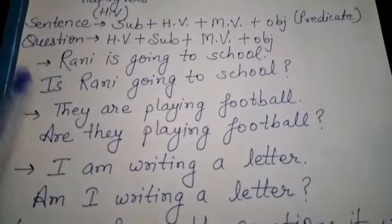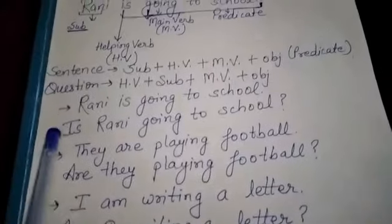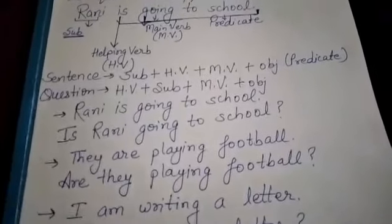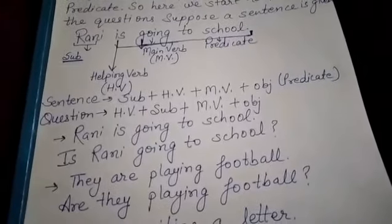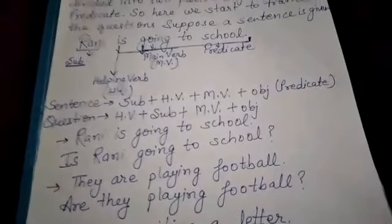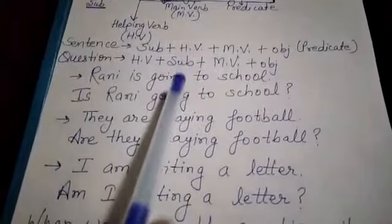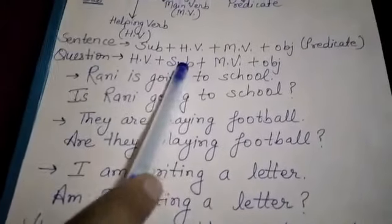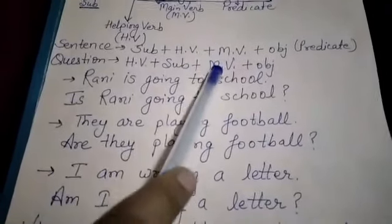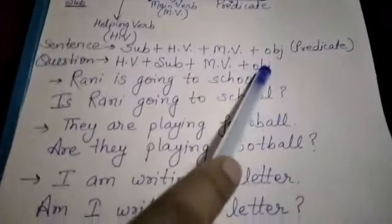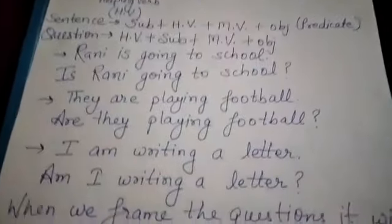ये sentence जो हमने question बनाया है, उसके लिए formulation क्या है? Helping verb, फिर subject, फिर main verb, फिर object.